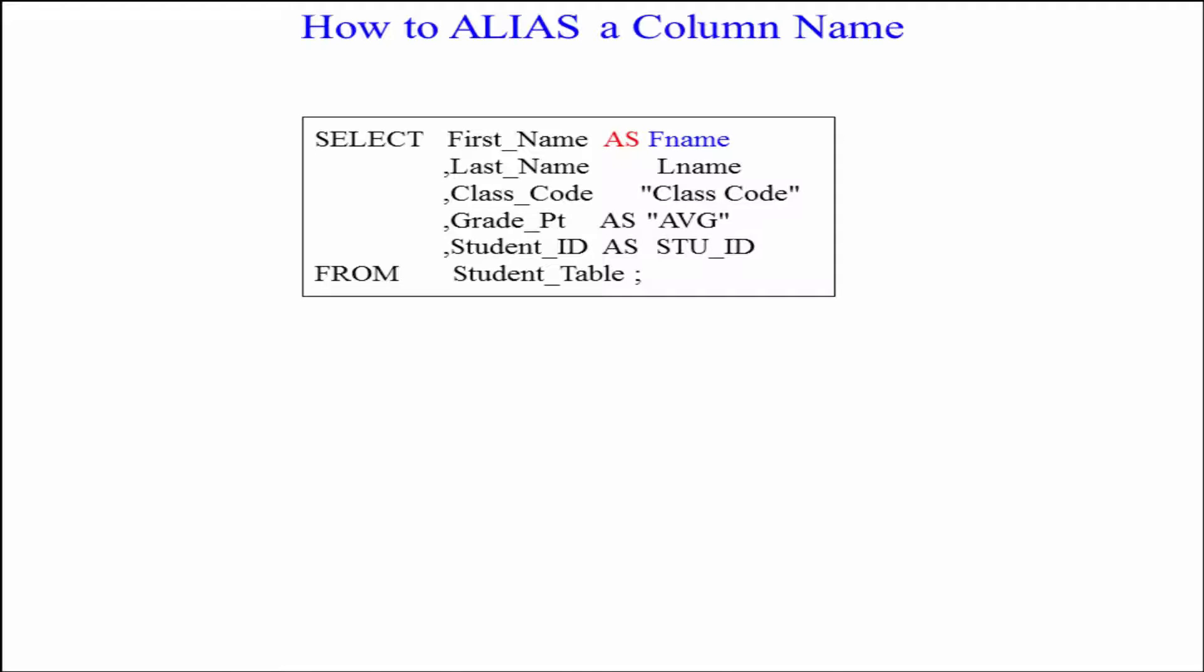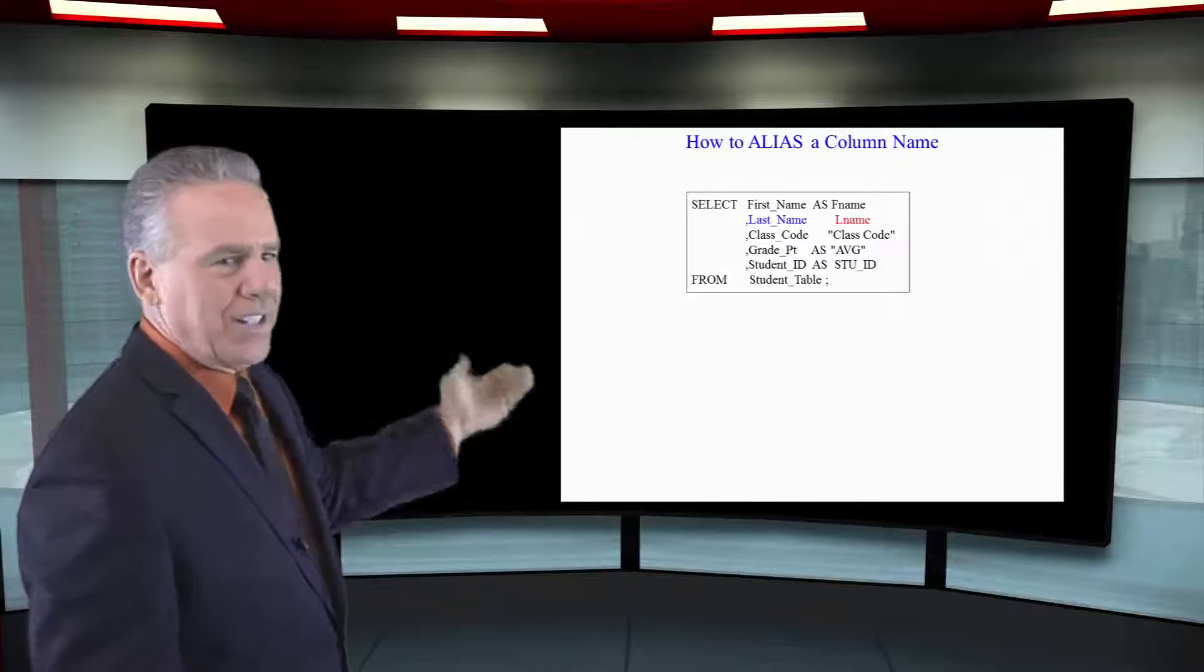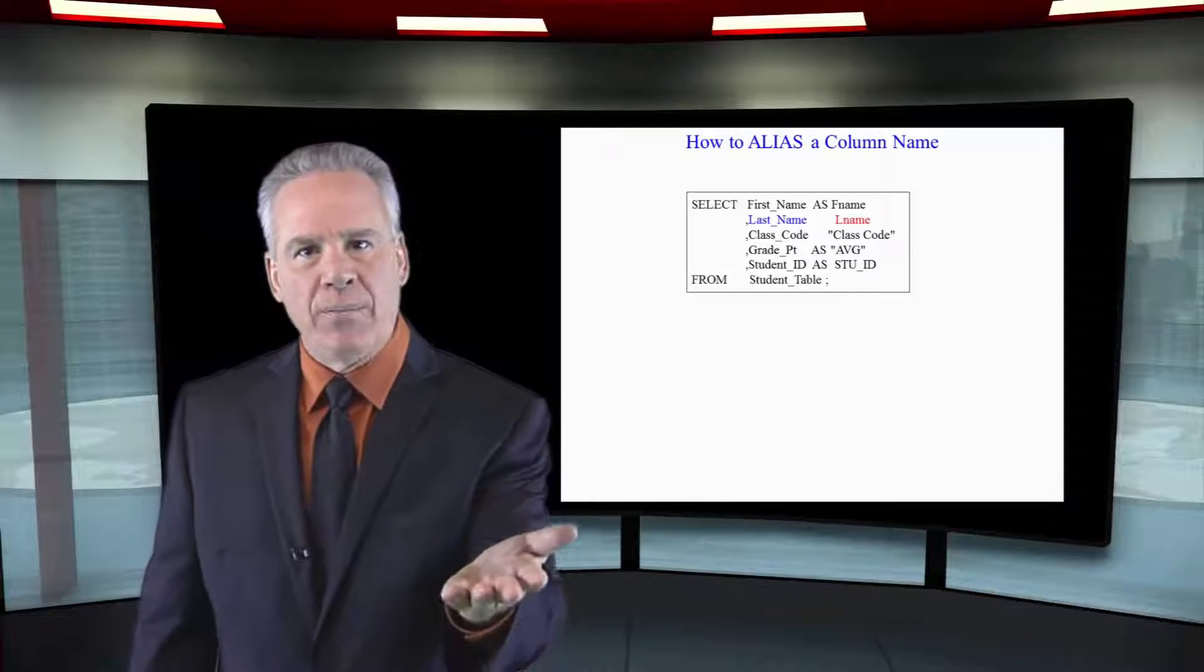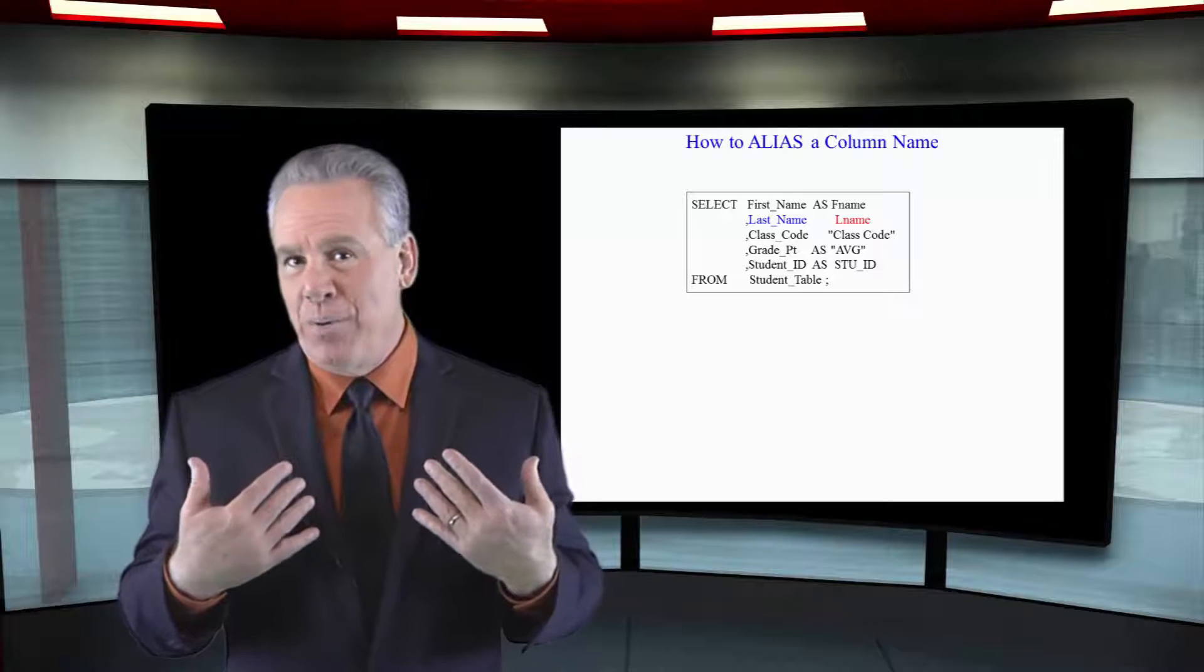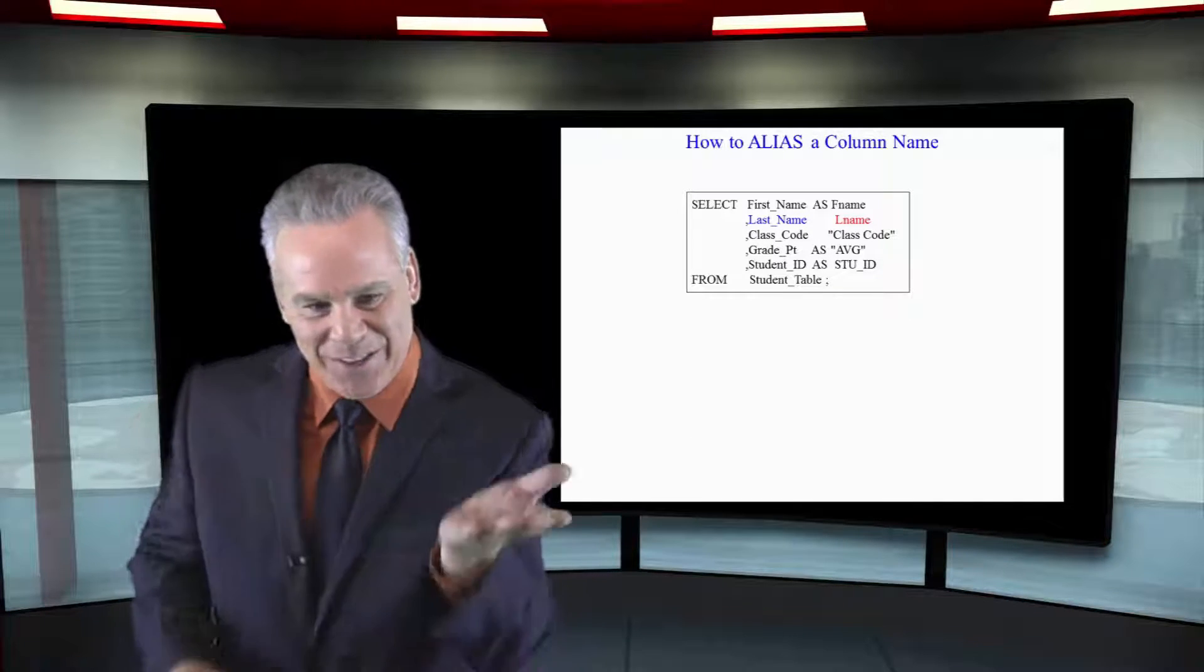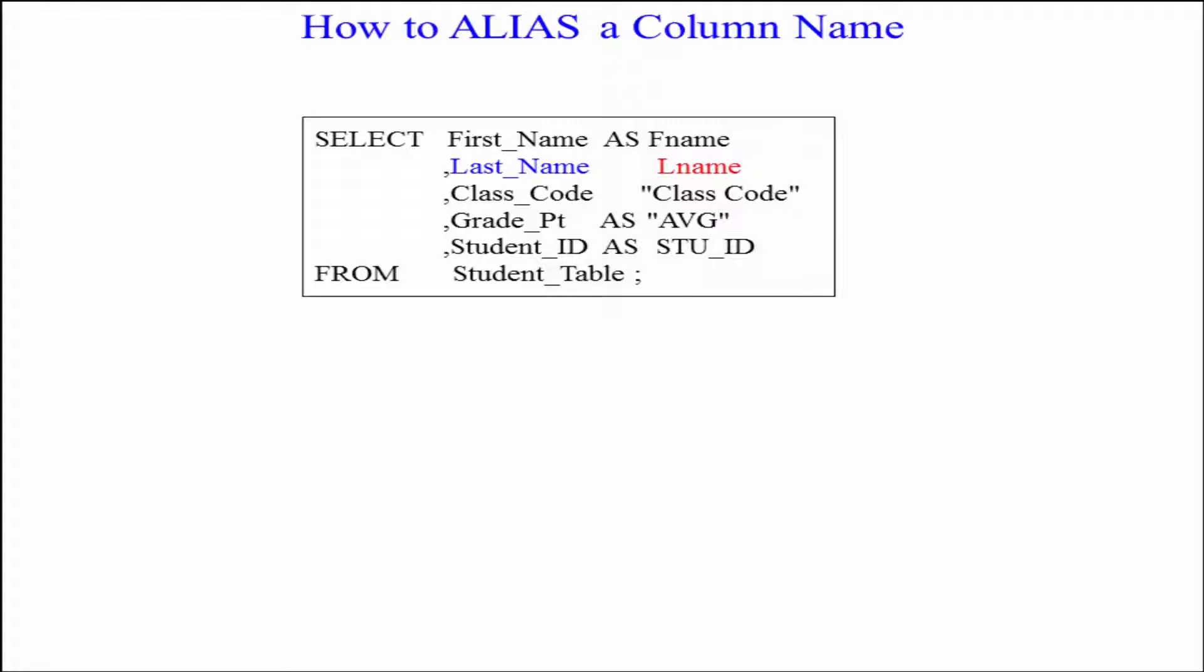Now notice the next example is last name and then L name. There's no AS there. You never need the AS. I like to put it because it really says I'm going to call this something else and that's my alias, but you never need AS. So L name will be the new name for last name on the report.